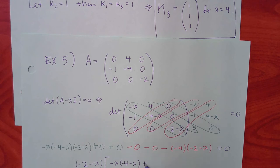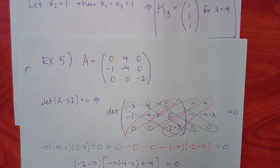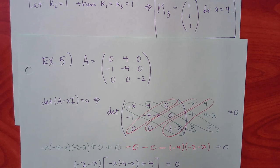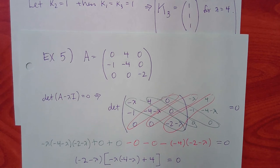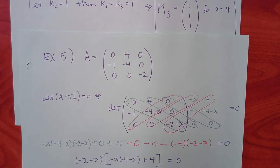Expanding inside the bracket: 4 lambda plus lambda squared plus 4, which factors as (lambda plus 2) squared. Factoring out the negative from the outer term too, we actually get negative (lambda plus 2) cubed equals zero, giving lambda equal to negative 2, repeated three times.